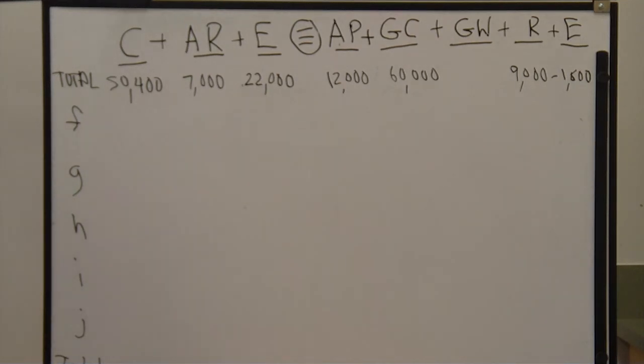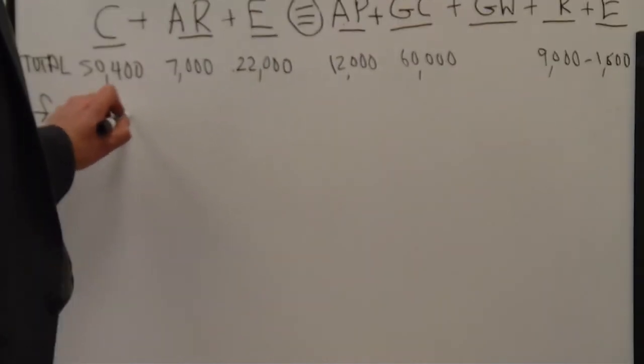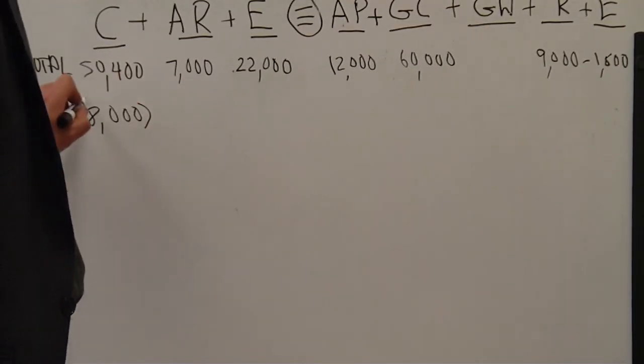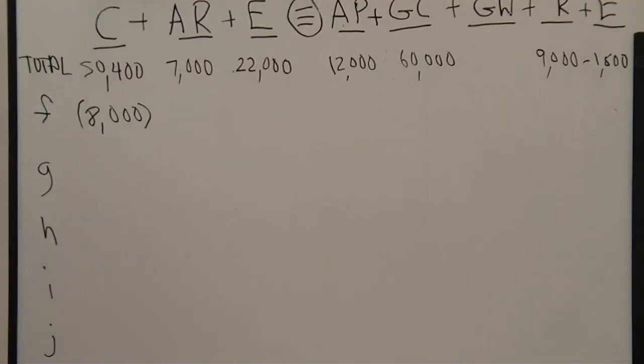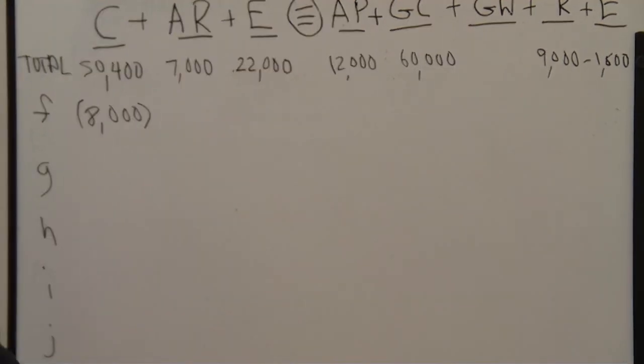In transaction F, the company purchased additional equipment for $8,000 cash. Notice then that the cash is a negative. It's going down. Meanwhile, equipment is going up $8,000.